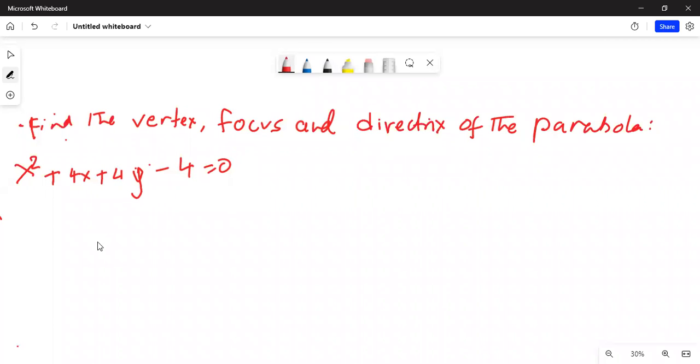It says find the vertex, focus and directrix of the parabola x square plus 4x plus 4y minus 4 equal to 0. Solution.